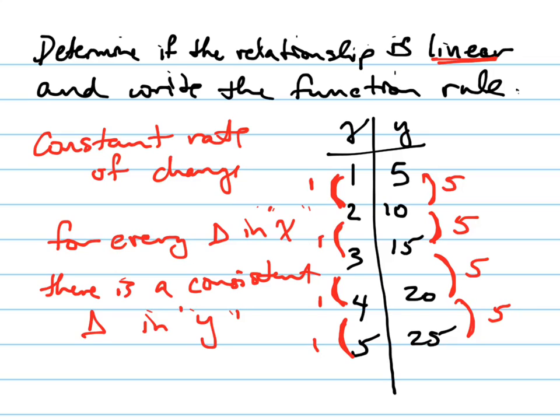So is it linear? Yes, it's linear. Because every time I go up one, I go up five.